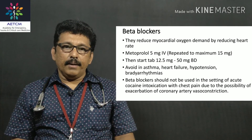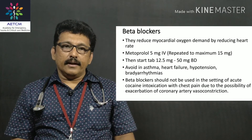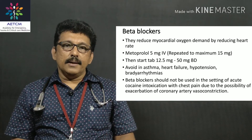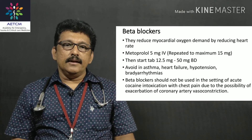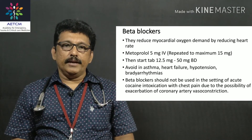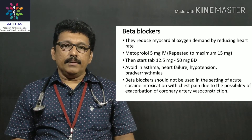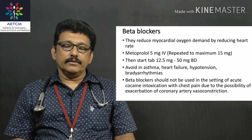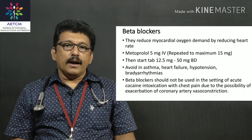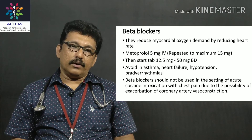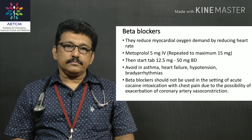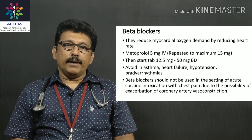The next drug in acute MI is a beta blocker. It reduces myocardial oxygen demand, reduces heart rate, increases coronary perfusion, and increases myocardial oxygen supply. Metoprolol is the ideal drug: 5 mg IV can be given, with repeated doses as needed, followed by metoprolol tablet 12.5 mg orally per day to be continued.